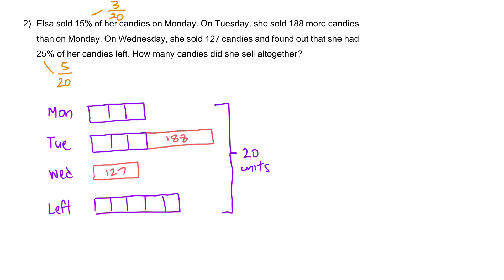How many candies did she sell altogether? They are trying to find out what is the total number of candies from Monday, Tuesday, and Wednesday. From this model, you should be able to see very clearly. We have 3, 6, 9, plus the 2 more, 11 units. 11 units plus 188 plus 127 will give you 20 units. Hence, 188 plus 127 must be equal to the remaining 9 units. Our first step, 9 units is equal to 188 plus 127, and that will give you 315.